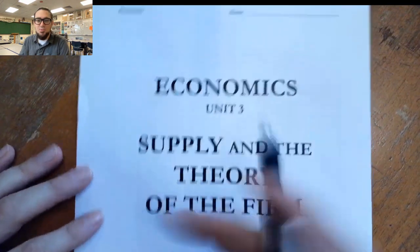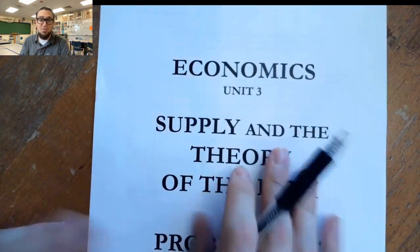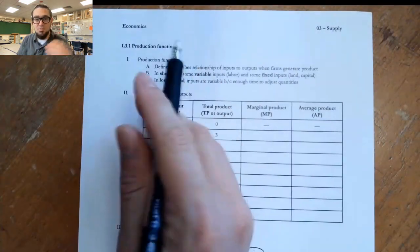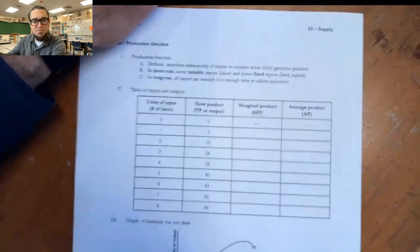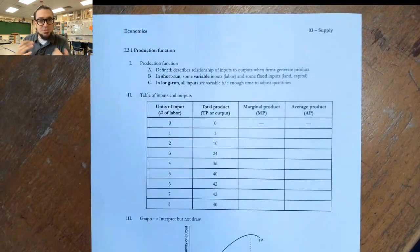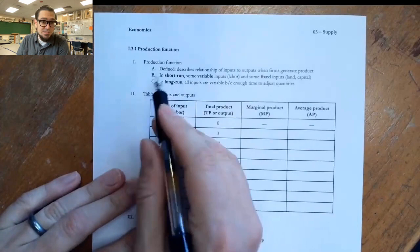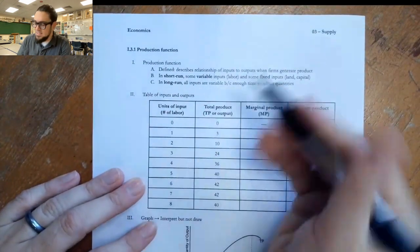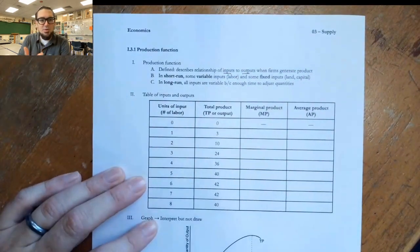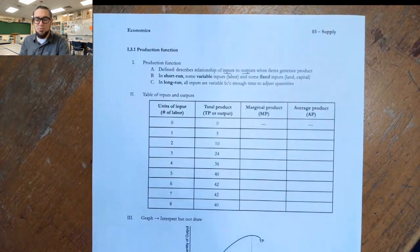Well, hi there. So in this first video we're going to be doing the first lecture of unit three, supply and the theory of the firm. What that's going to entail is taking a look at something called the production function. The production function is a relationship, just like demand is a relationship or supply is a relationship. In this case, it's the relationship of how we turn inputs into outputs, the idea that we want to generate product, and what's this combination of inputs that becomes outputs.